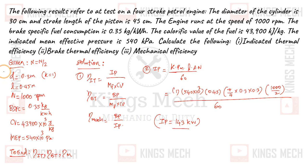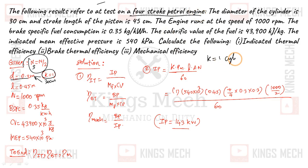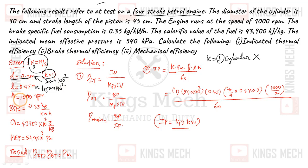Given data: Ns = N divided by 2. Diameter = 30 cm = 0.3 m. Brake specific fuel consumption = 0.35 kg per kilowatt hour. CV = 43,900 × 10³ J per kg. Mean effective pressure = 540 × 10³ Pascal.